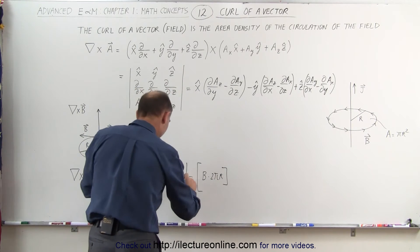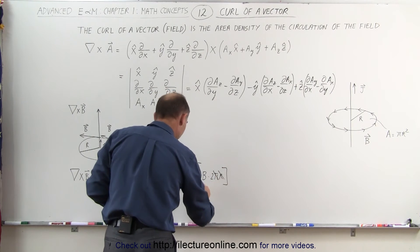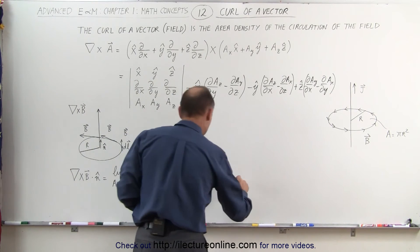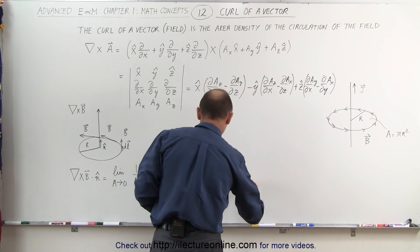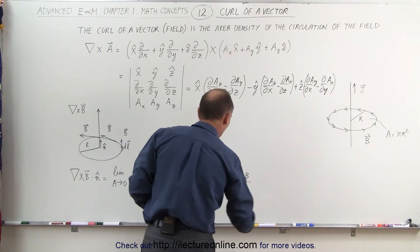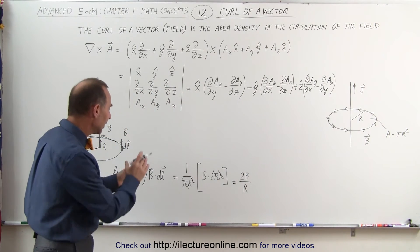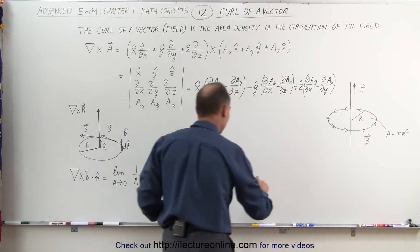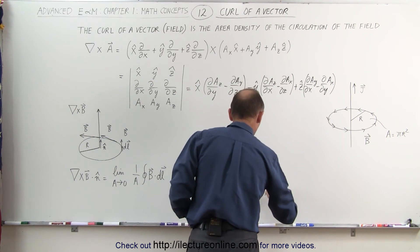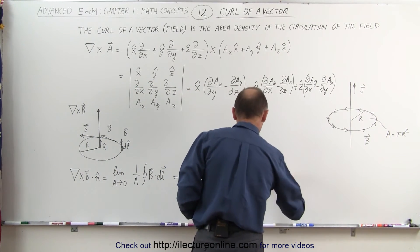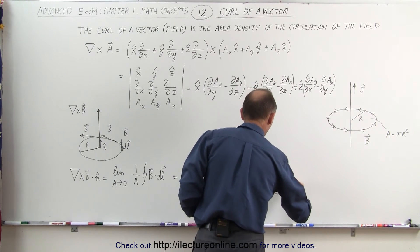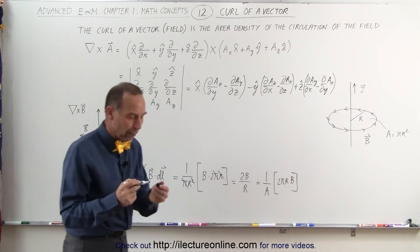And then of course the pi's cancel out, one of the R's cancel out, and what we get here is that this is equal to 2B divided by R, or what you can also say is if you leave it as 1 over A, that means that this is equal to 1 over the cross-sectional area times 2 pi R times the strength of the B field. Maybe you want to look at it that way.